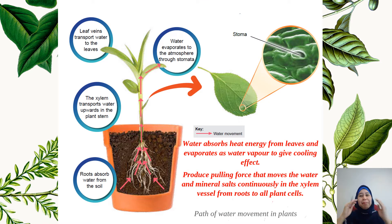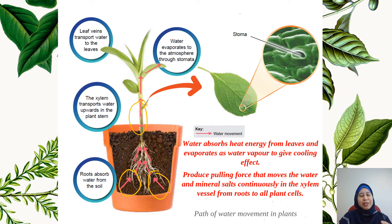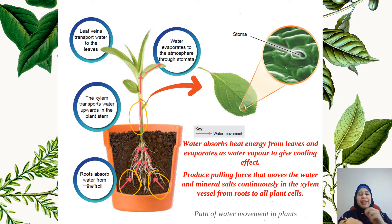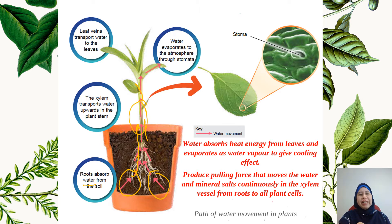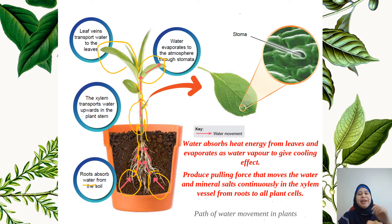Now we look at the path of water movement in plants. The red arrow here indicates the water movement. It starts from the soil, where the root will absorb the water and also mineral salts from the soil. The water and mineral salts will then move along the xylem upwards in the plant stem. From the stem, the leaf veins will transport the water to the leaves. At the leaves, the water will then evaporate to the atmosphere through the stomata.